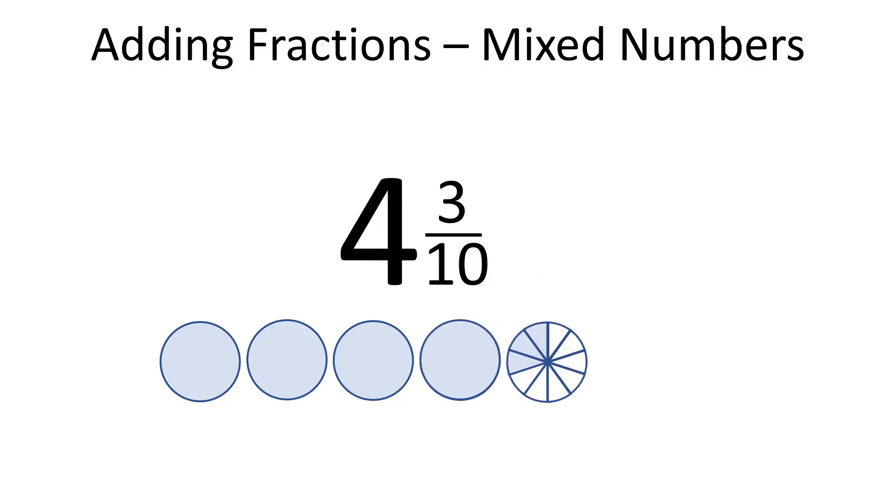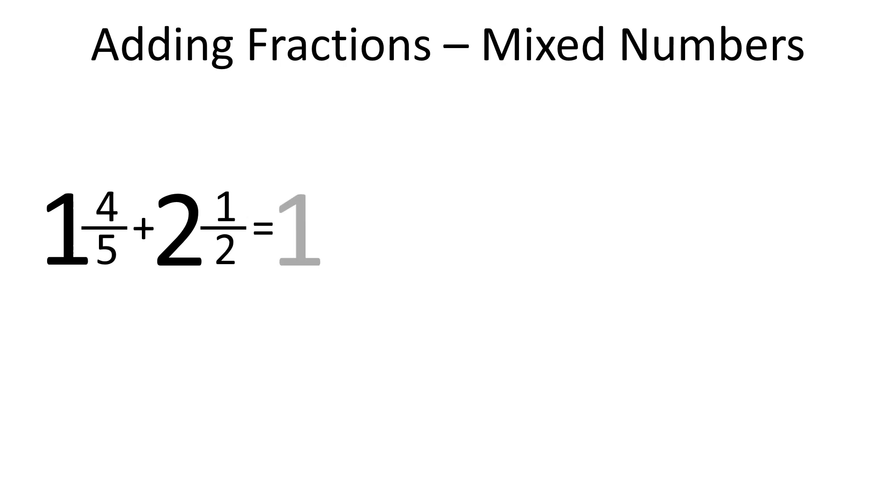Let's repeat what we did. First we added the whole parts, and next we found a common denominator, which is 10. Then we represented 4 fifths and 1 half as equivalent fractions with a common denominator of 10. To do that, we multiplied the denominator and numerator of 4 fifths by 2, and the denominator and numerator of 1 half by 5.